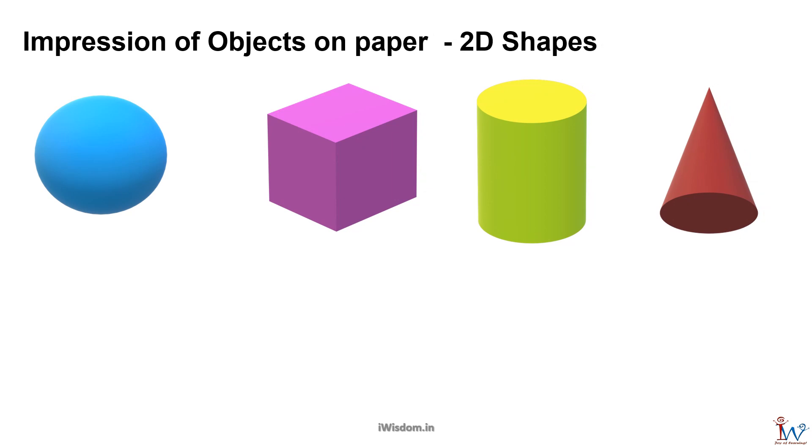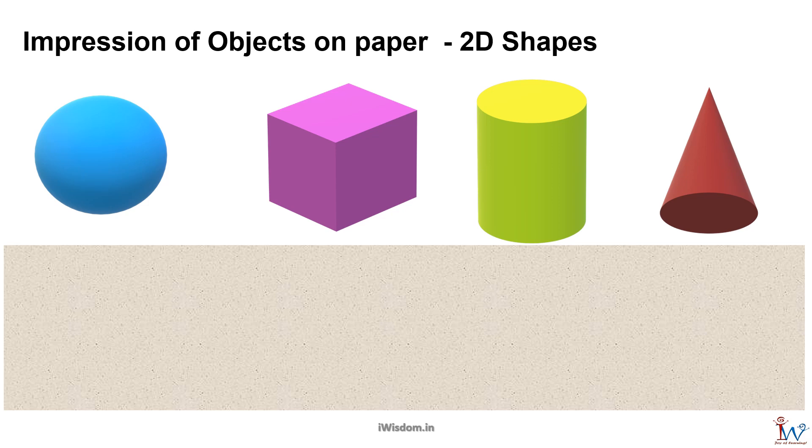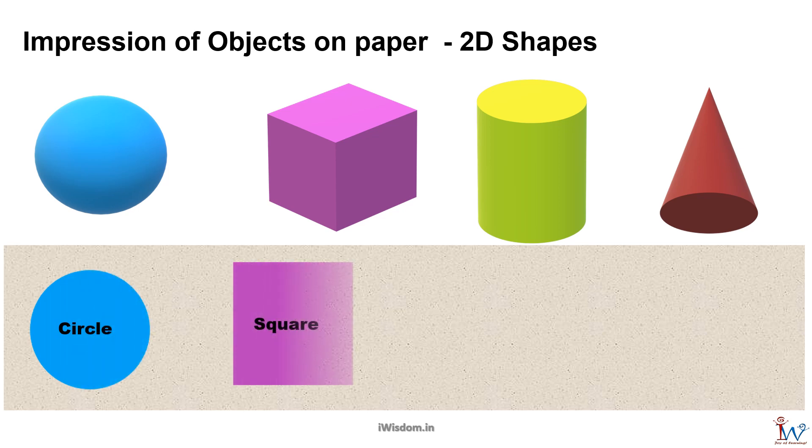When you place objects that you can hold on a paper, you get shapes that have no height. When you look at the spherical ball from top, you see a circle. When you place cube on a paper and trace it, you get a square.